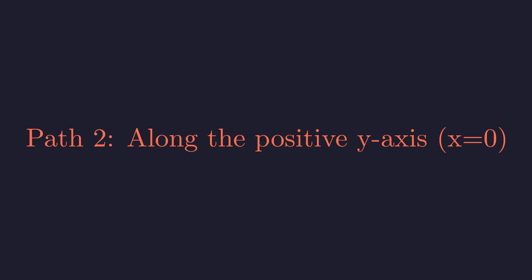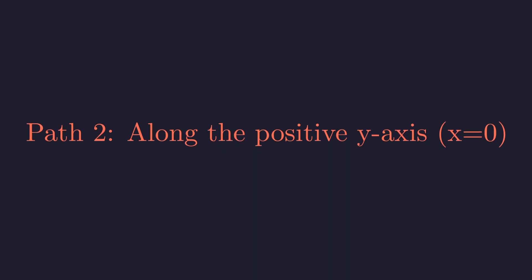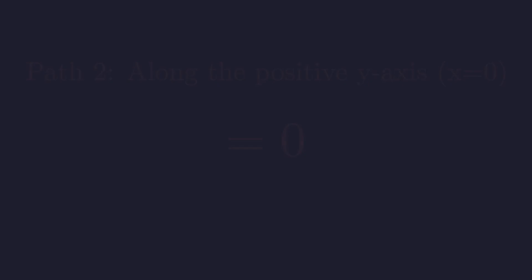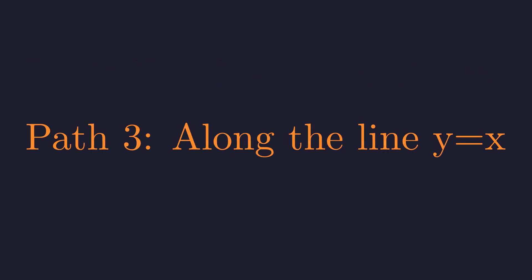Now for our second path, we will approach along the positive y-axis, where the x coordinate is always zero. Here we evaluate the limit of zero to the power of y as y approaches from the positive side. Zero to any positive power y is zero. The limit is therefore zero.